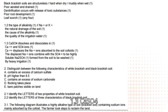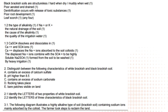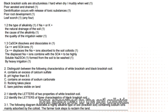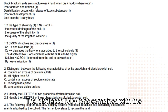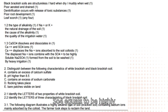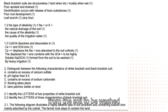1.3 CaSO₄ dissolves and dissociates into Ca²⁺ and SO₄²⁻ ions. Ca²⁺ displaces the Na⁺ ions adsorbed to the soil colloids. The displaced Na⁺ ions combine with SO₄²⁻ to form highly soluble Na₂SO₄, which is then washed from the soil by heavy irrigation.